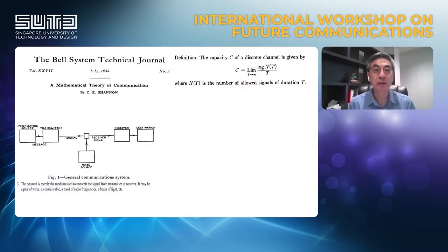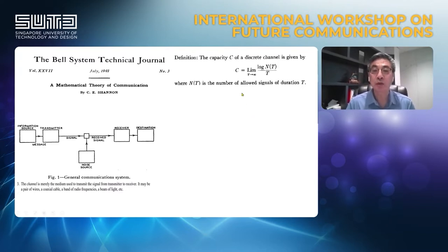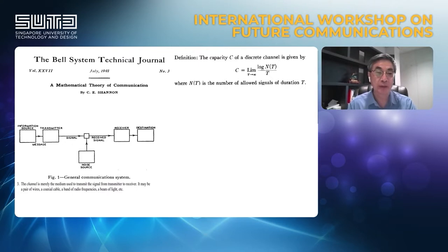It is well known that in 1948, Shannon published his classical paper entitled 'A Mathematical Theory of Communications.' In this paper, he defined the channel capacity, and described the general communication system in Figure 1, where he described the noise source as separate from the transmitter and receiver.